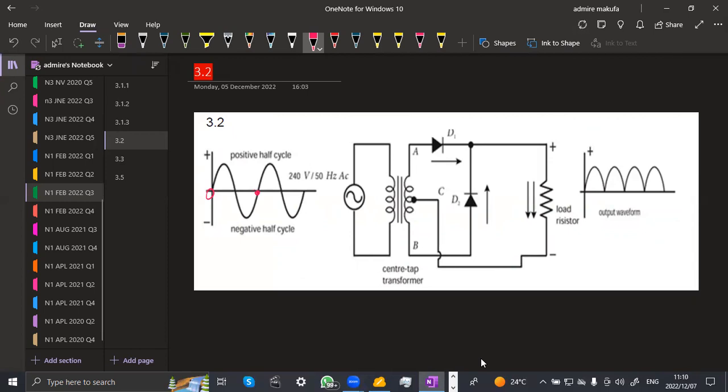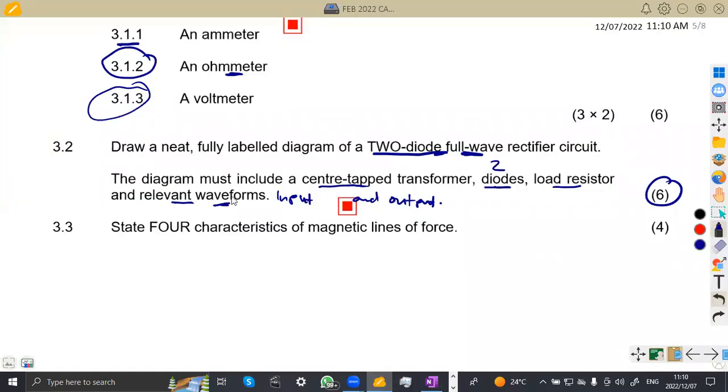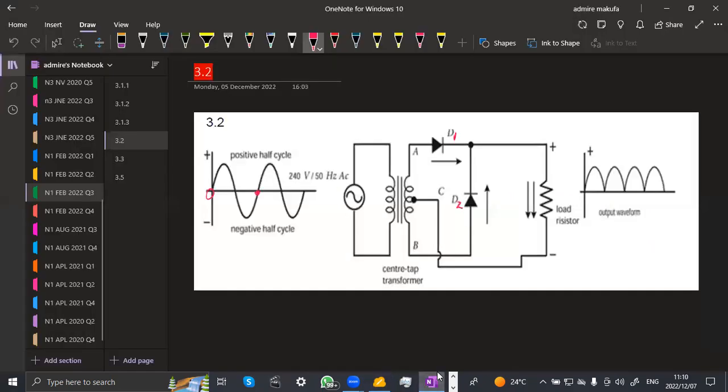Then we've got the input here, which is AC to the transformer, then the center tap, diode D1 and diode D2. This is our D2, this is our D1, and the center tap to the load. In some cases, they might ask you to have or to put capacitors here. We are not given that. We just have the load resistor.